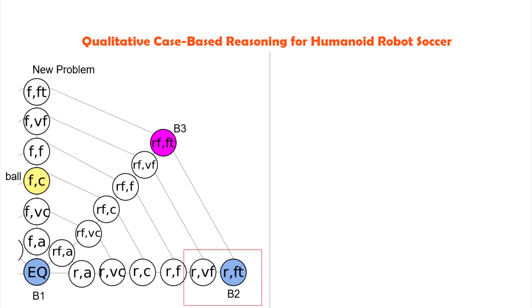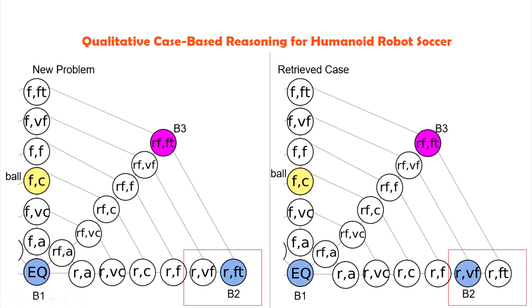After the case retrieval, the reuse step consists of adapting the position of the robot in the problem to its qualitative position in the retrieved case, where B1 needs to infer the qualitative orientation and distance of B2.